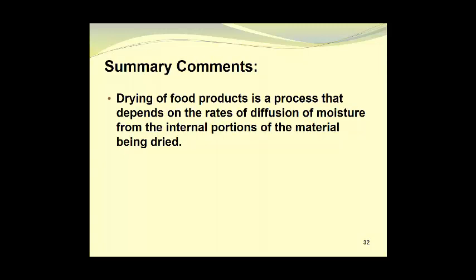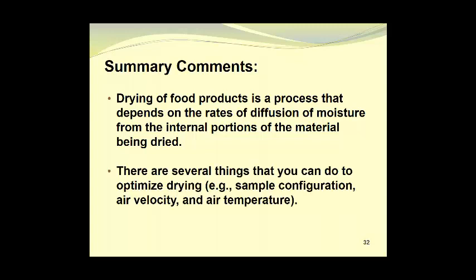In summary, then, drying of food products is a process that depends on the rates of diffusion of moisture from the internal portions of the material being dried. There are several things that you can do to optimize drying. You can address sample configuration, you can use a suitable air velocity, and you can use an appropriate air temperature.